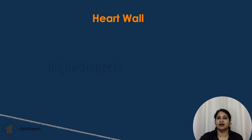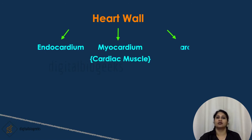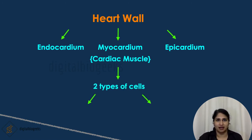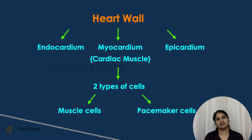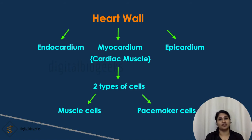The heart wall is composed of three layers: the inner endocardium, the middle myocardium, and the outer epicardium. The myocardium is also known as cardiac muscle. There are two types of cells in the cardiac muscle: muscle cells and pacemaker cells. Ninety-nine percent of the cells are muscle cells, which can contract very easily. Pacemaker cells set up the heartbeat, and the fastest pacemaker cells are in the sinoatrial node, present in the upper part of the right atrium.